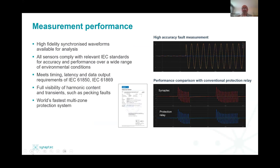This is a 5P class protection system, tested by KEMA labs and certified. We can show graphical plots from factory acceptance tests comparing our fault response to a standard electromechanical relay — directly comparable with a very high level of accuracy. It meets all standards for IEC 61850 and IEC 61869 relating to timings, latency, and data outputs. Because there is no intermediation or variable latency between the source of our signal and the processing centrally, it all comes at the speed of light to the center.